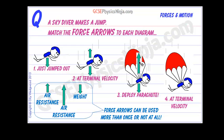As the skydiver decelerates, the drag force decreases in size until — you guessed it — it matches the weight force again. This is the second terminal velocity of the skydiver. The weight is the same, and the drag has reduced until it balances. At this second terminal velocity, the skydiver moves at a constant speed.